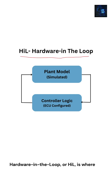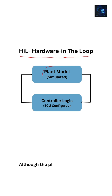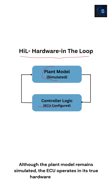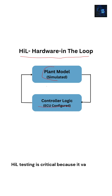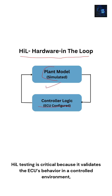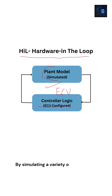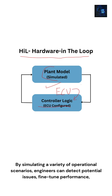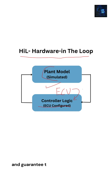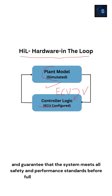Hardware in the Loop, or HIL, is where we bring in the real hardware — the ECU. Although the plant model remains simulated, the ECU operates in its true hardware configuration. HIL testing is critical because it validates the ECU's behavior in a controlled environment, ensuring that it will perform reliably when integrated into the vehicle. By simulating a variety of operational scenarios, engineers can detect potential issues, fine-tune performance, and guarantee that the system meets all safety and performance standards before full-scale vehicle integration.